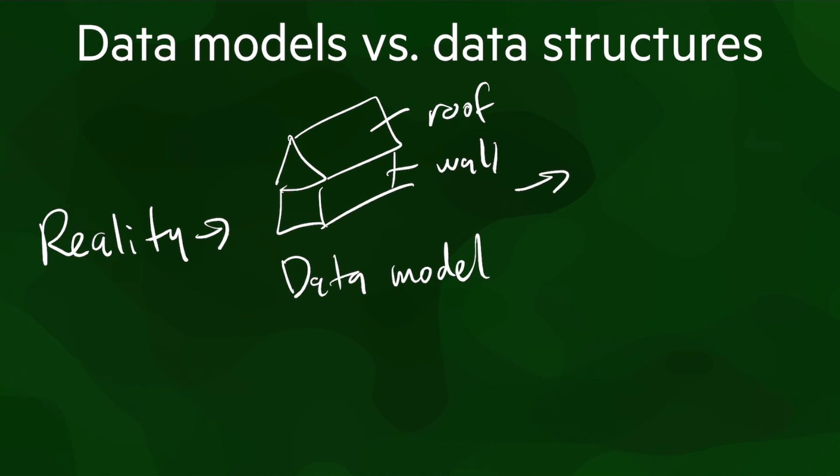Then, starting from a data model, we move on to a low-level structure that is close to something we can implement in a computer. Rather than real-world objects, we can then define things in terms of simple structures, such as lists, tuples, or sets. This is a data structure.